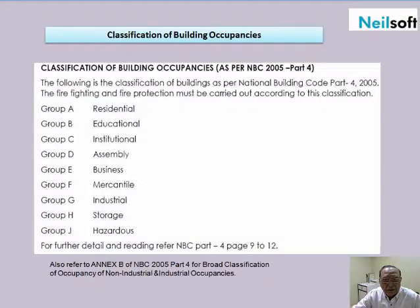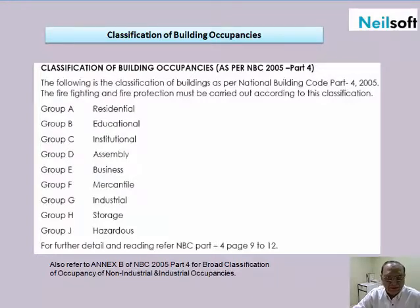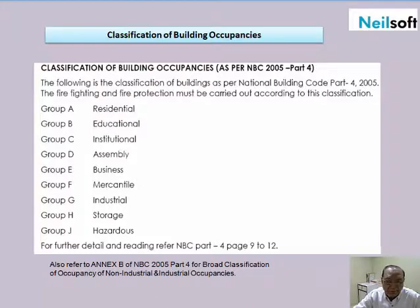The classification of occupancies — buildings are designated in groups as per their occupancy. Group A is residential, Group B is educational, Group C is institutional, and Group D is assembly.